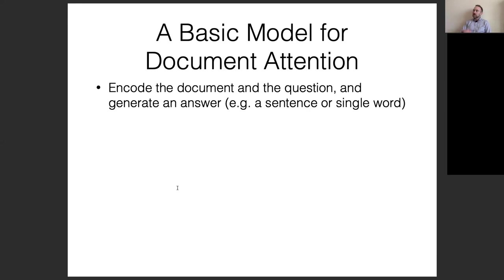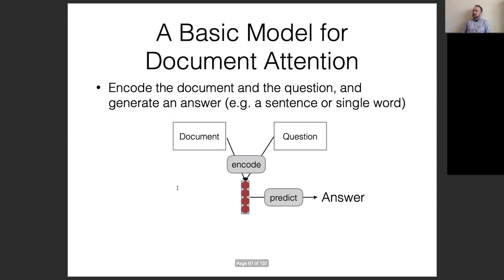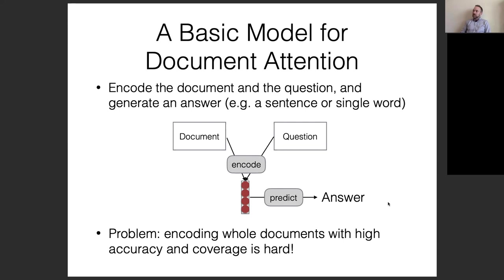One approach is to encode the document and the question and try to generate an answer — you take the document and the question, encode them together, and then make a prediction. The problem with this is that if you encode the documents independently of the questions, it can be hard. Think about it from a human perspective: it's harder to read a document, internalize all of it, and then answer questions about it — compared to reading the questions first and then skimming the document for answers. Encoding independently is the harder of the two choices, both for humans and models.